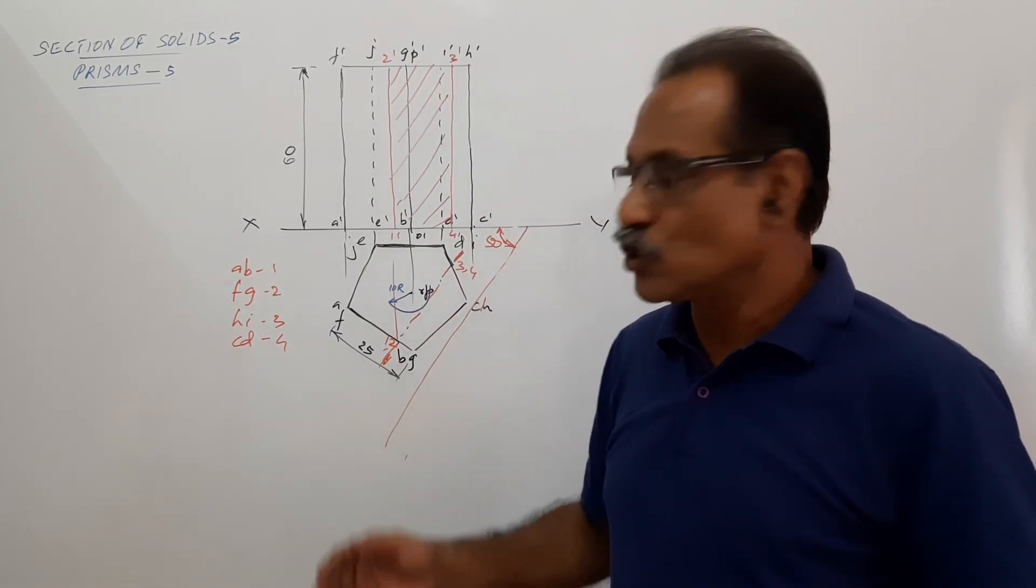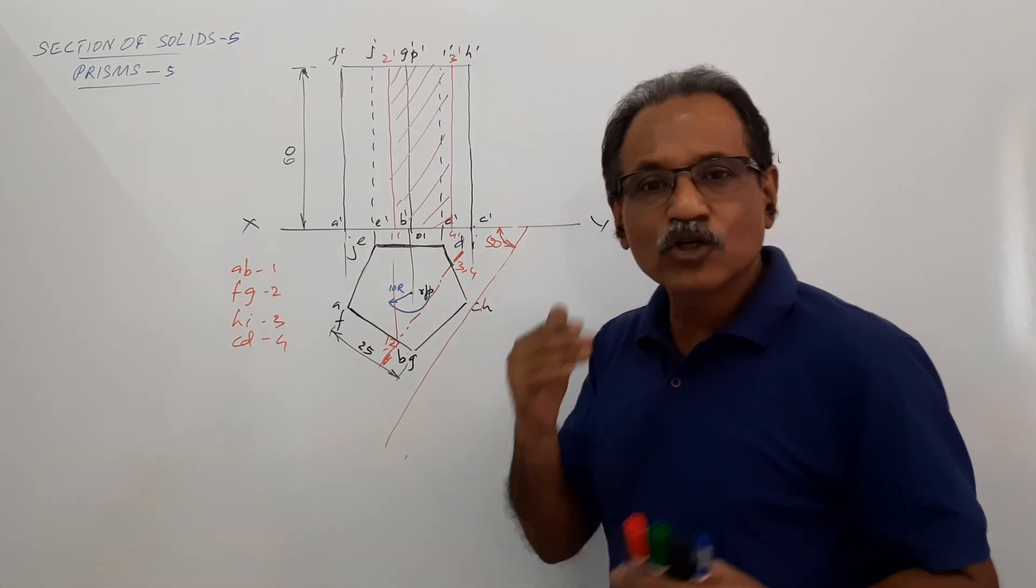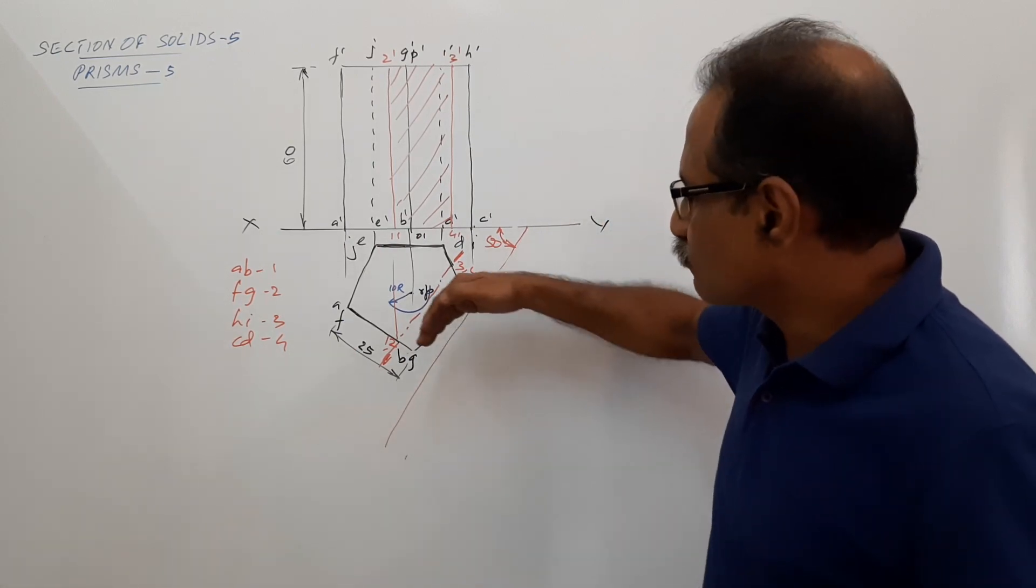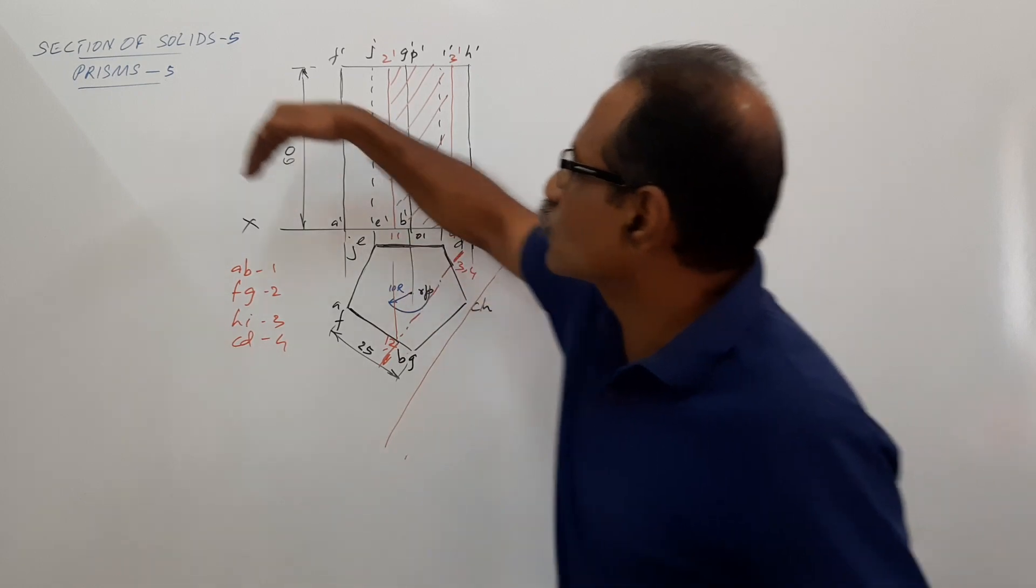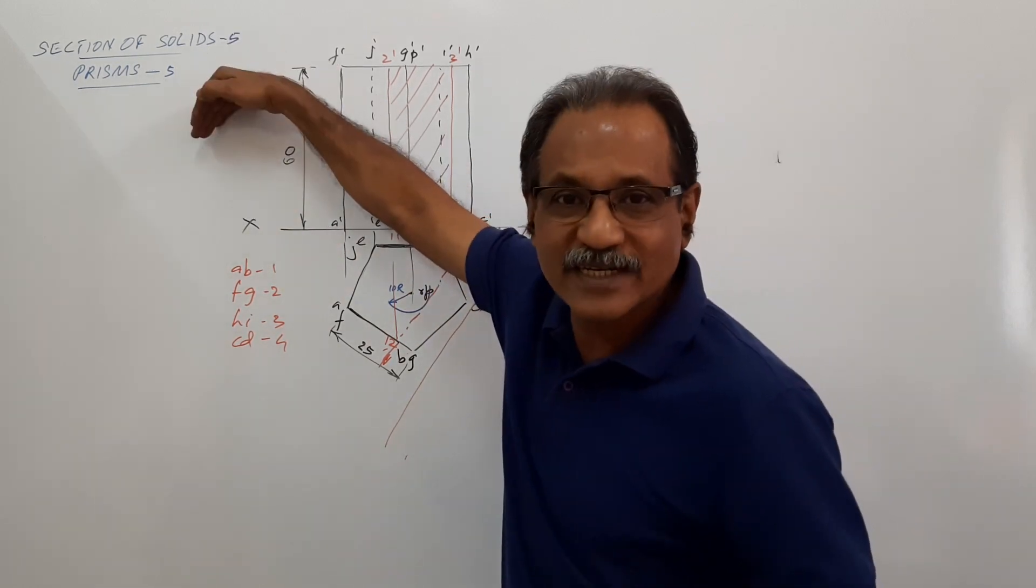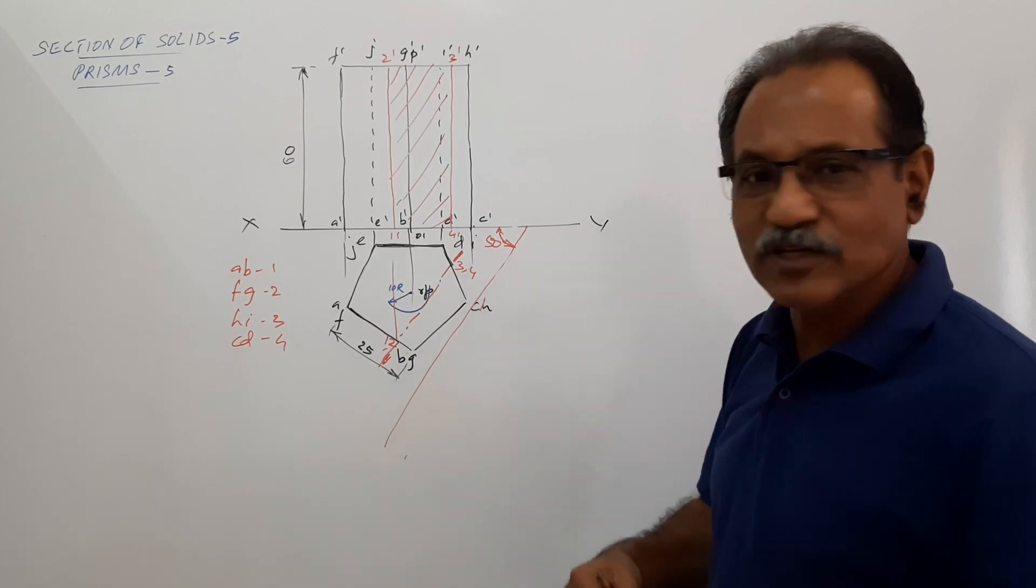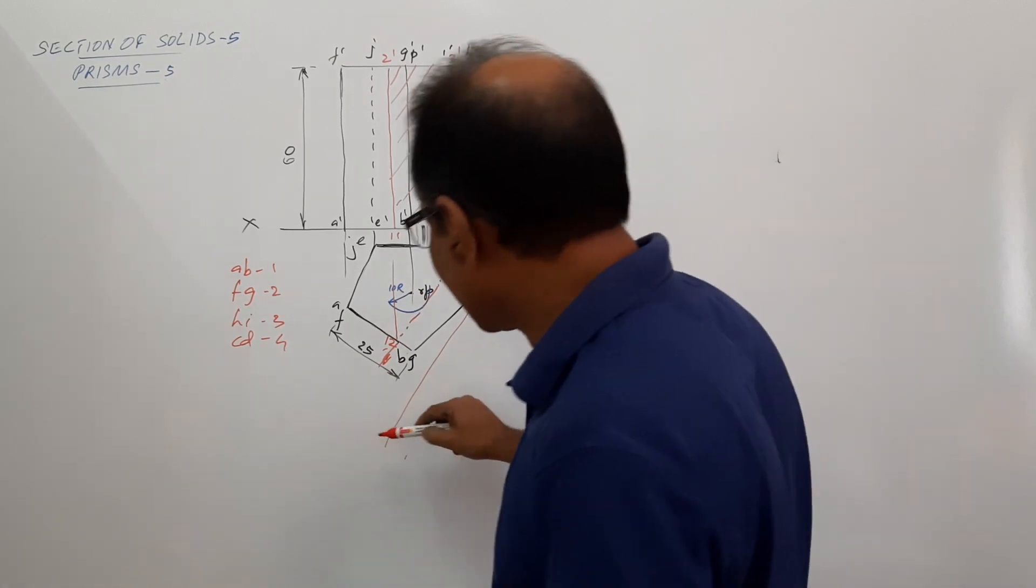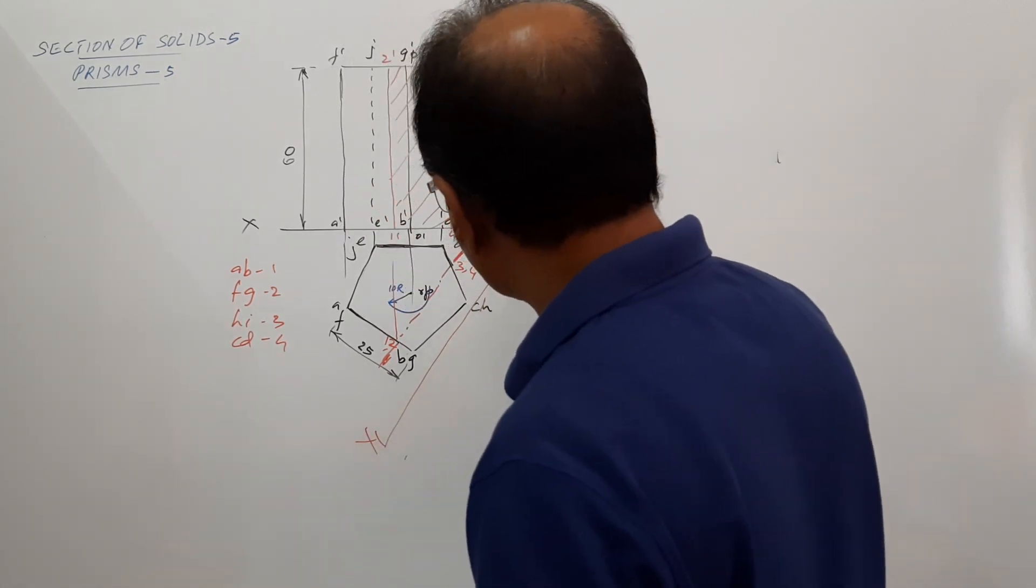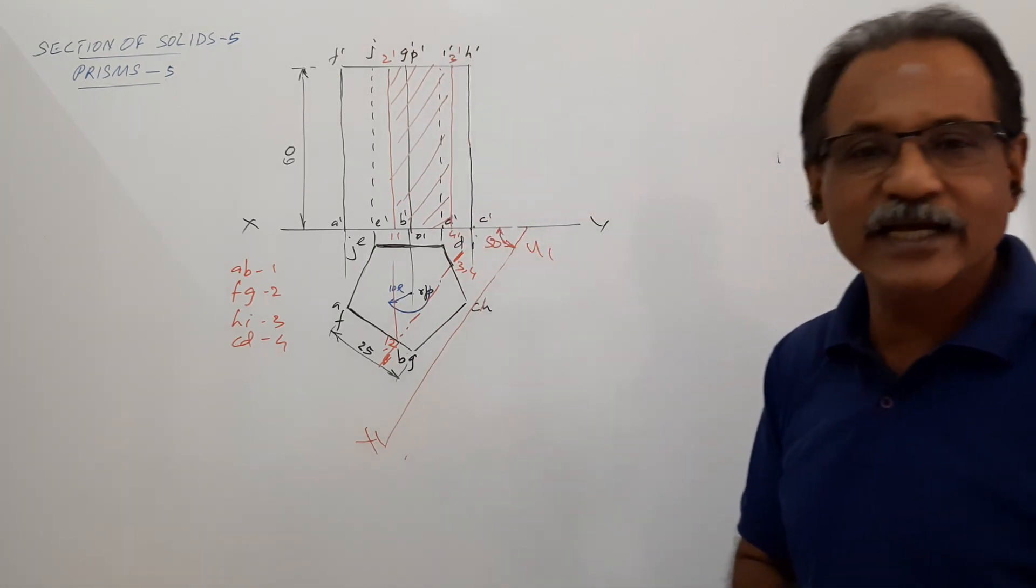Now you need to draw the true shape. To draw the true shape, there are two options. One is you can draw it here, or you can draw it here. Drawing it here is correct, but drawing it here is more convenient. So this line which you have initially drawn will be considered as X1Y1.